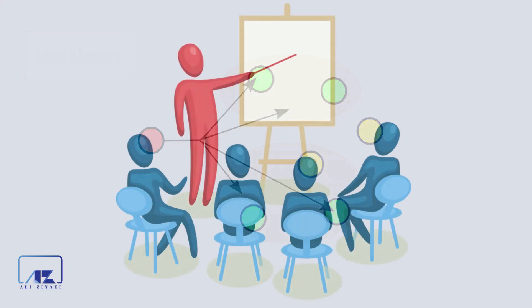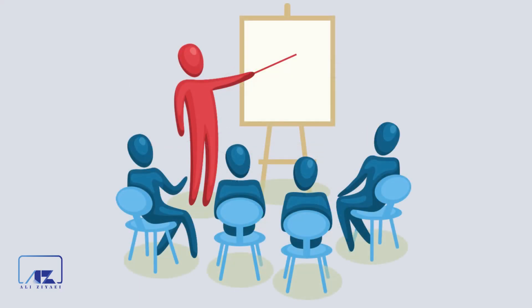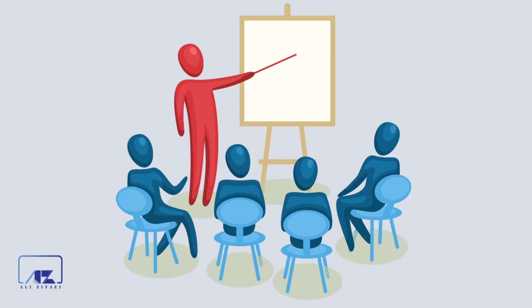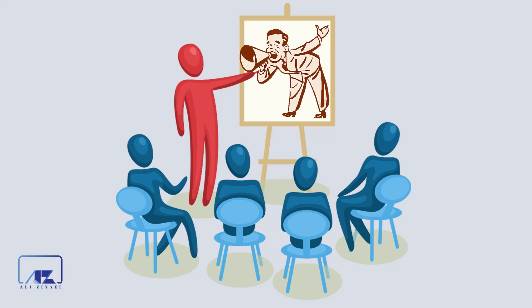For example, a teacher in a class talks with one student — calling a name and speaking directly. This is one-to-one communication, so they are using unicast, similar to a computer sending data to another computer. For broadcast, the teacher comes to class and announces to everyone: 'Next week is your exam.' In this case, the teacher is using the broadcast model — one sender transmitting data to all clients on the network.